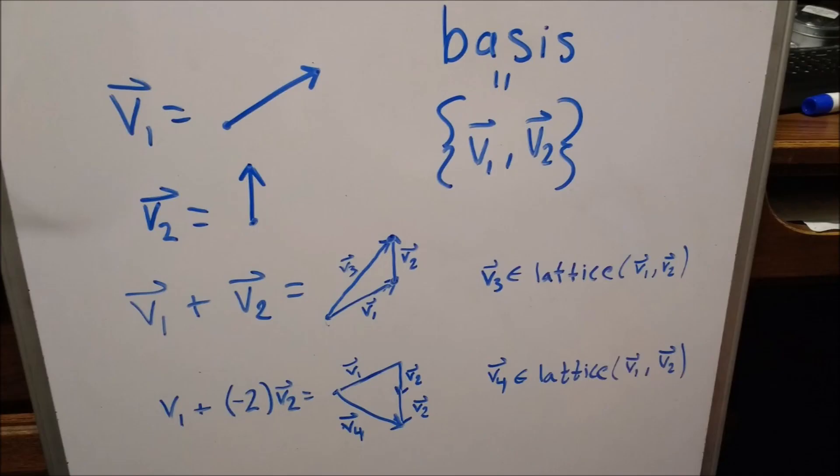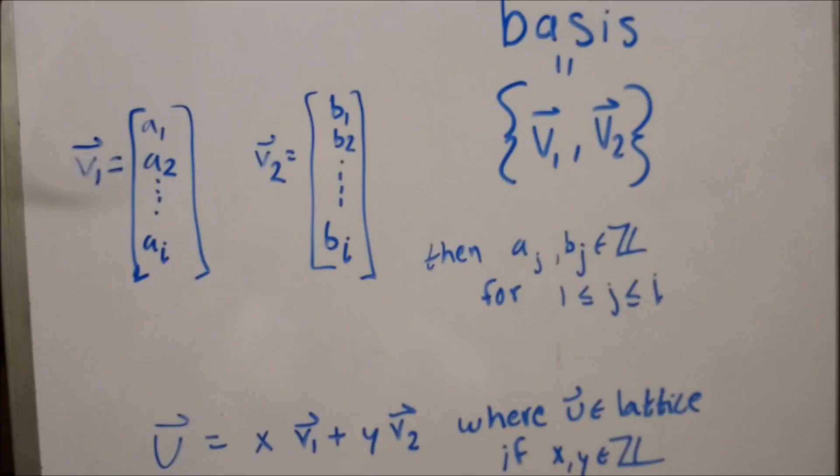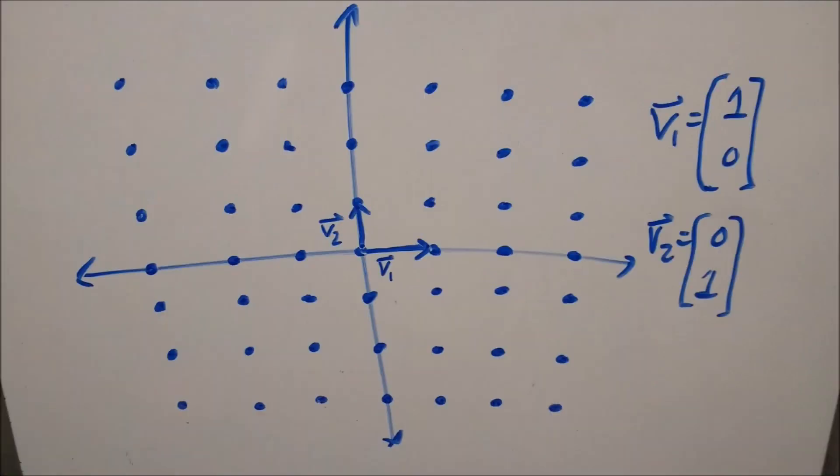This just means that given a set of vectors that point in different directions and cannot be expressed as the scaled sum of any other vector in the set, we can take the scaled sum of these vectors to create other vectors that are also in the lattice. The only difference between a vector space from linear algebra and a lattice is that any vector in the basis of a lattice can only contain integers, and when scaling a lattice basis, we can only scale by integers, though still positive, negative, or zero.